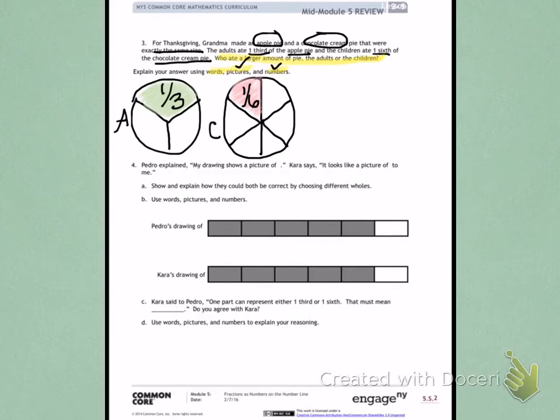Now, on number four, I am missing some information from my picture. The fractions did not show up. So I'm going to do my best to guess what the picture said, but if I'm wrong, then you need to look at yours more carefully. Pedro explained my drawing shows a picture of a fraction. Kara says it looks like a picture of another fraction to her.